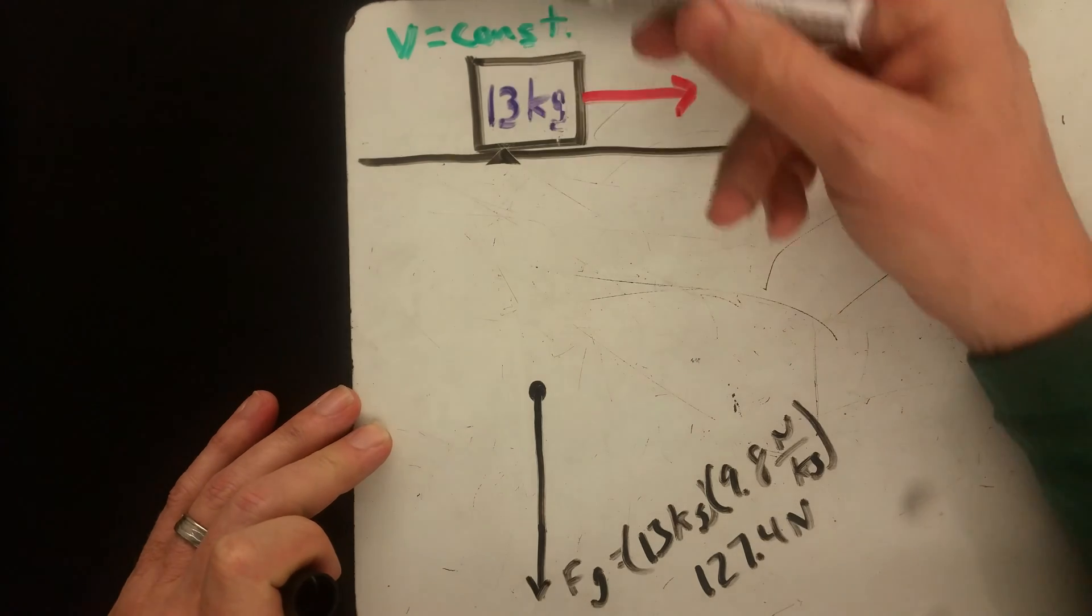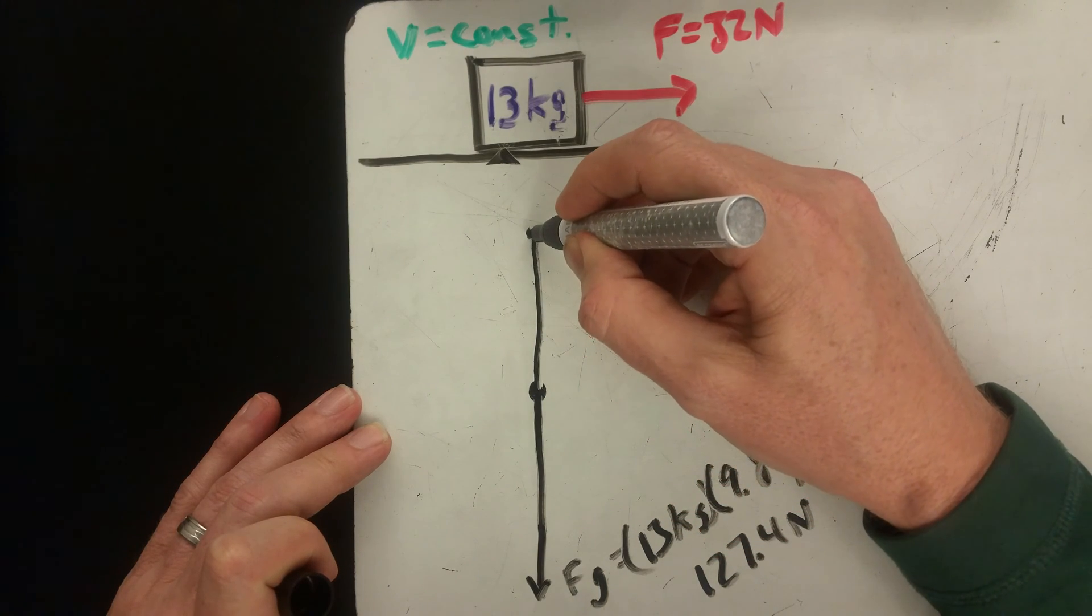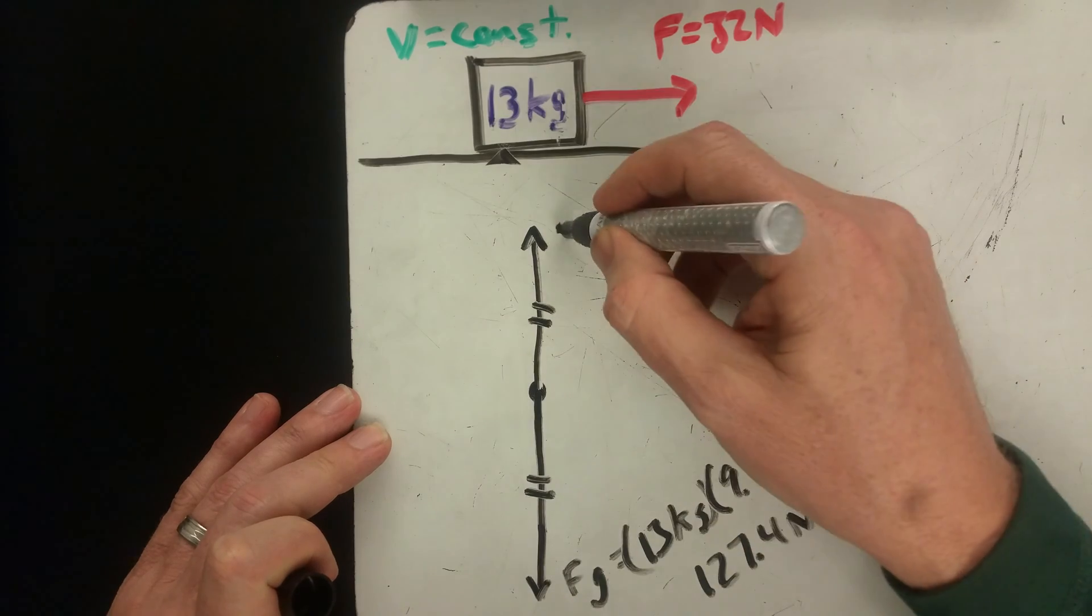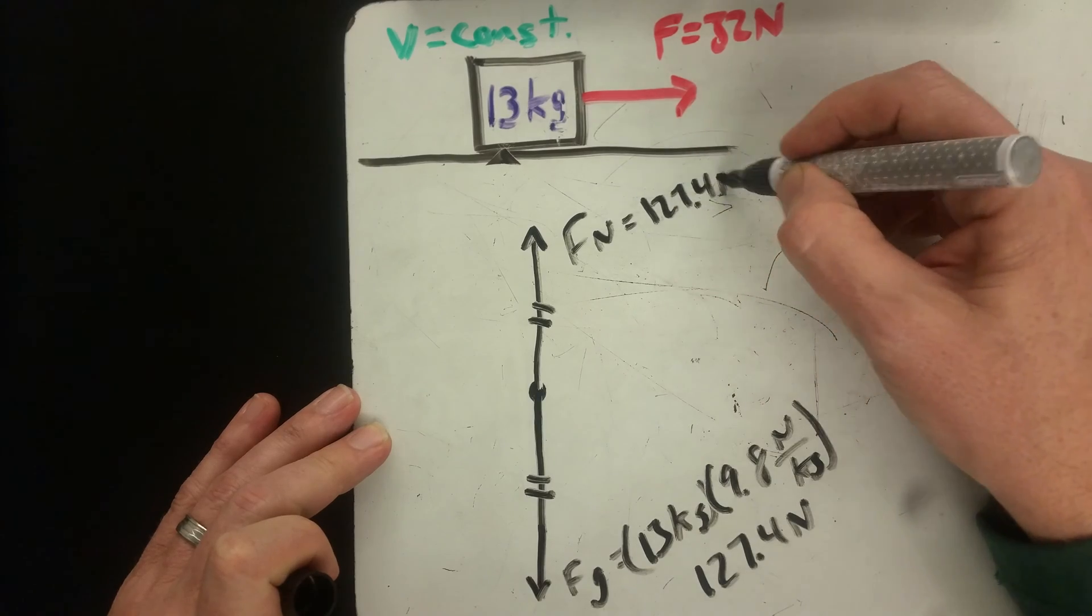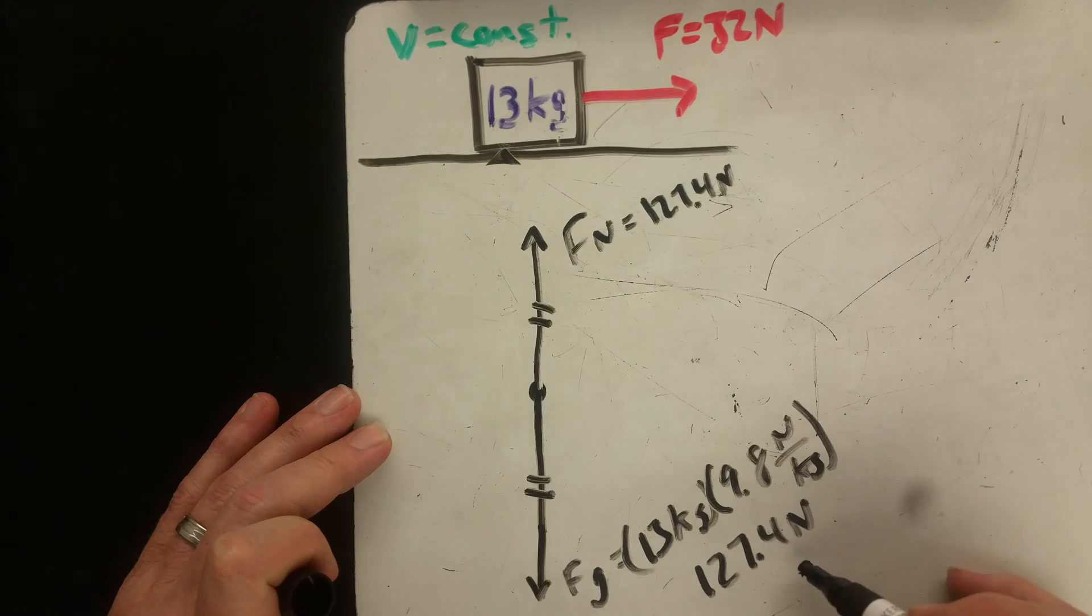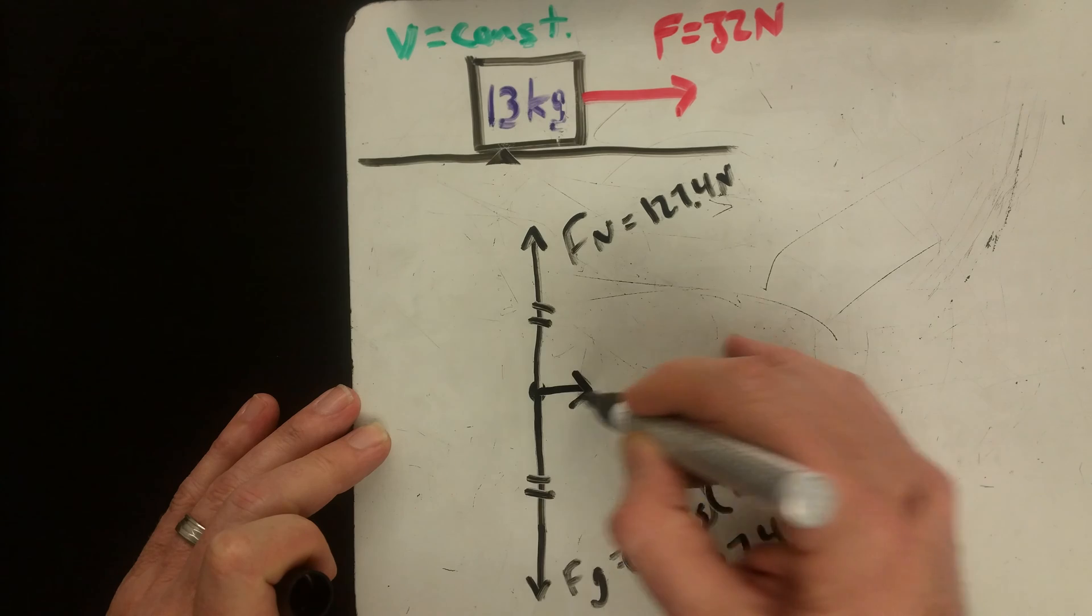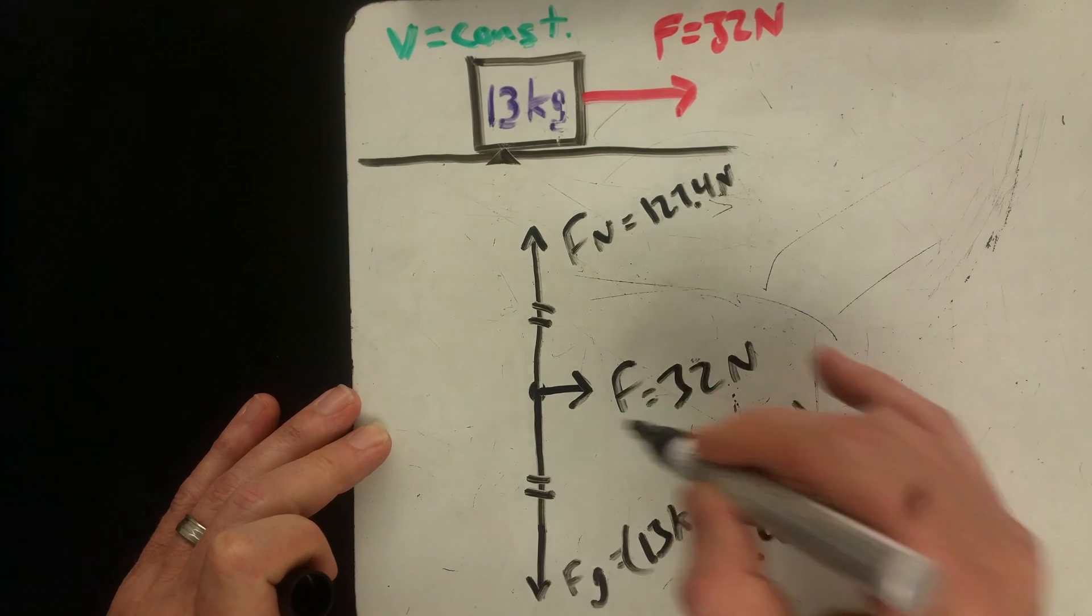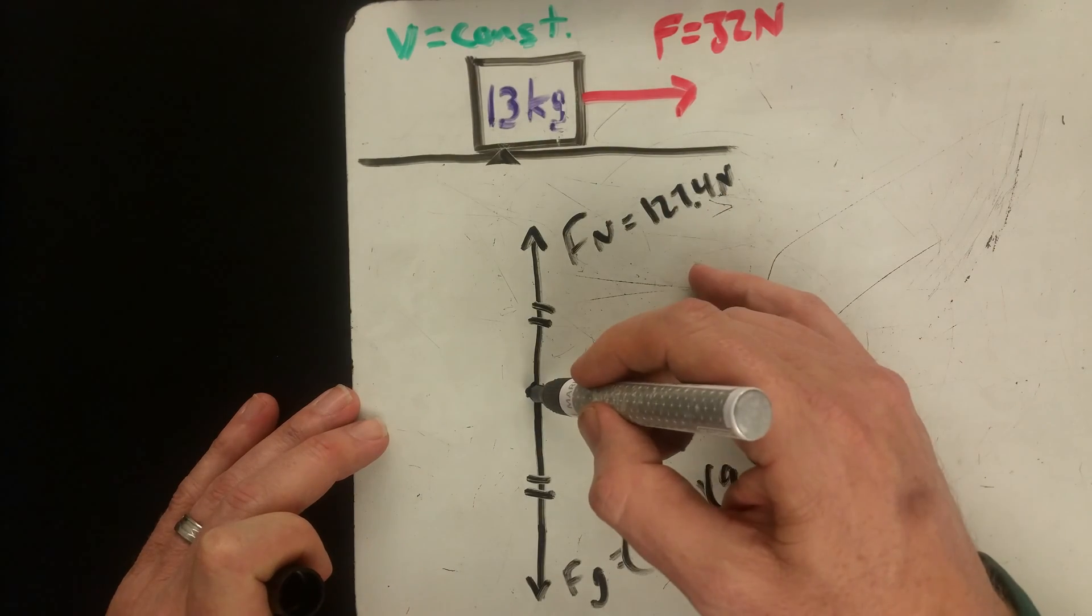Because there's no other vertical forces, we know that our normal force is going to be equal and opposite. We've got a force of 32, that's about a quarter of that. There's our applied force of 32 newtons, and because it's at a constant velocity, we now can also identify that there must be a force backwards.